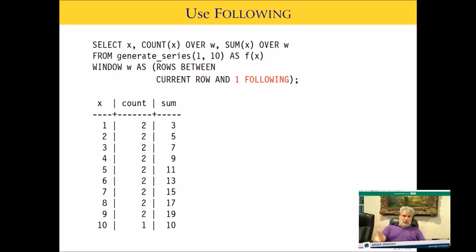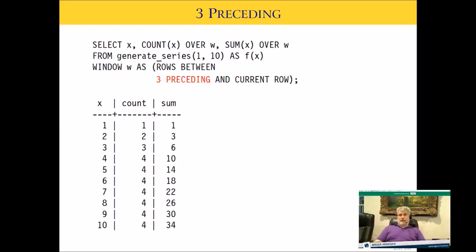Similarly using FOLLOWING: ROWS BETWEEN CURRENT ROW AND 1 FOLLOWING gives two rows in every count except the last row which has just one (no row after it). The sums are 1+2=3, 2+3=5, 3+4=7, and so forth. With 3 PRECEDING: counts go 1, 2, 3, and then 4 all the way through since there are now three rows before each. The sums follow exactly what you'd predict — three preceding rows plus the current row.